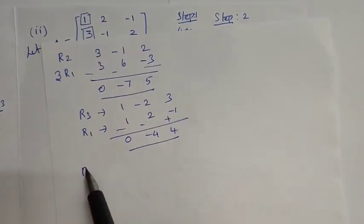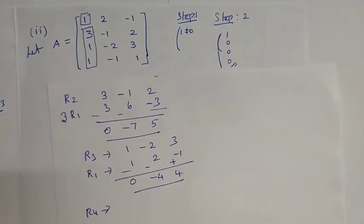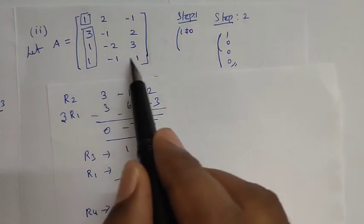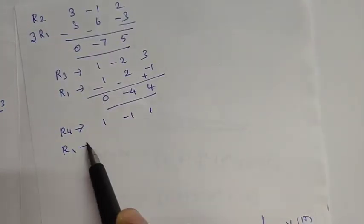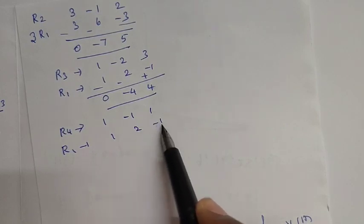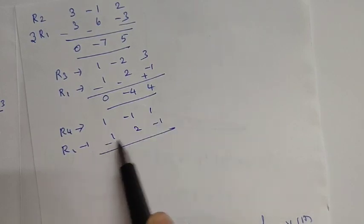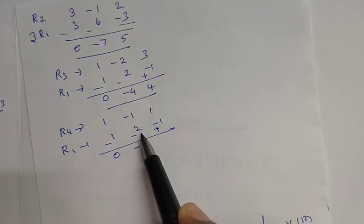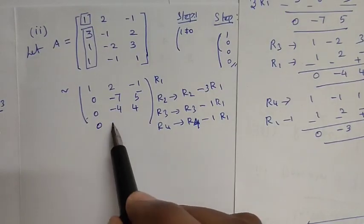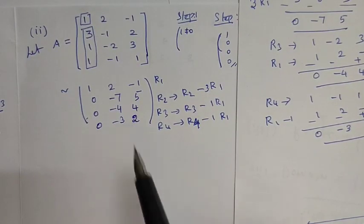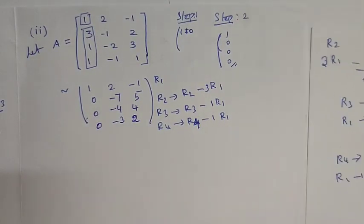For R4 minus R1: R4 is 1, minus 1, 1. R1 is 1, 2, minus 1. We change to minus 1. The result is 0, minus 3, 2. Step 2 is now complete.